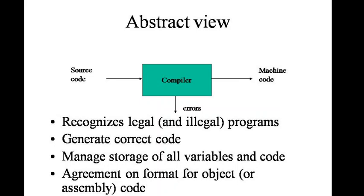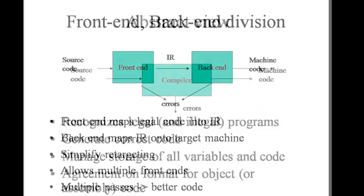Moving to the next point — this is the abstract view of a compiler. यह आपका source code है, जो हमने program लिखा है, और वो जाएगा compiler के पास। Compiler क्या करेगा? इस source code को line by line scan करेगा, compile करेगा, और various errors को — जैसे कि spaces, proper code न होना, variables declare न करना, semicolon भूल जाना — इन errors को compiler trap करेगा। Trap करने के बाद उसको machine code में convert करेगा।